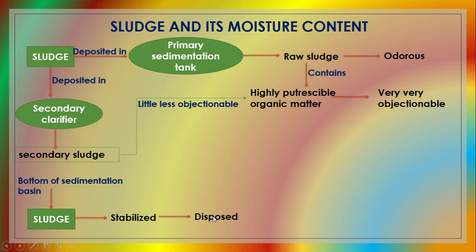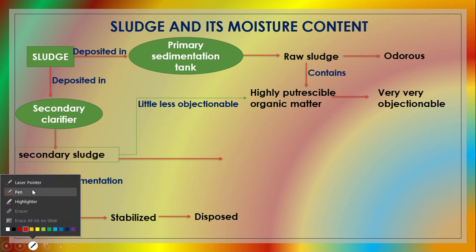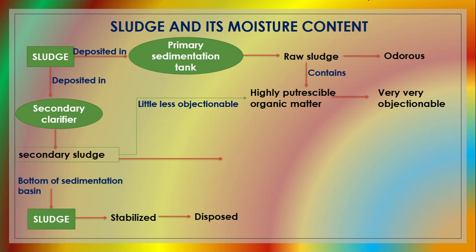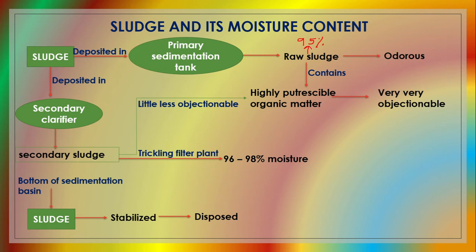In addition to the putrescibility, another problem caused by the sludge is its high moisture content. In the case of raw sludge, the moisture content is about 95%, and in the case of secondary sludge from an activated sludge treatment plant, it is about 98% to 99%.